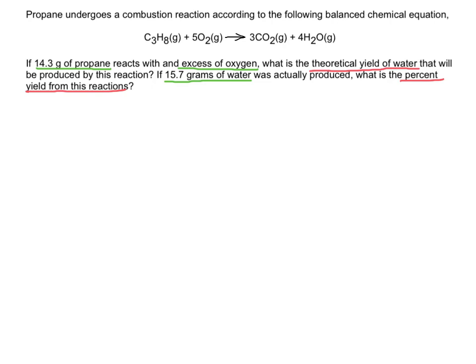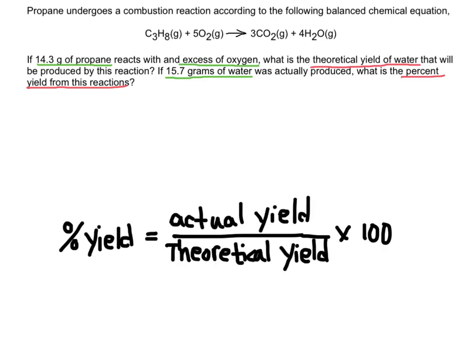So here's the equation we use to calculate percent yield. We take the actual yield, what was actually produced, and we divide that by the theoretical yield. Now theoretical yield we always have to calculate based on the amount of the reactants that we're using. In this case it's 14.3 grams of propane. So we'll use that to calculate the amount of H2O. Theoretical we calculate. Actual is always given in the problem. In this case it says 15.7 grams of water was actually produced.